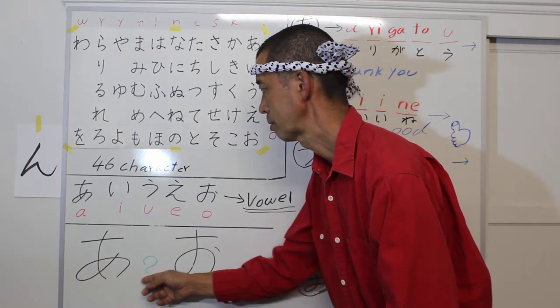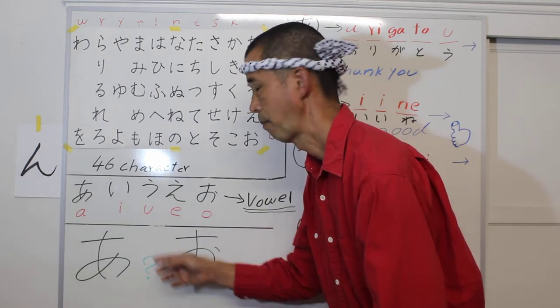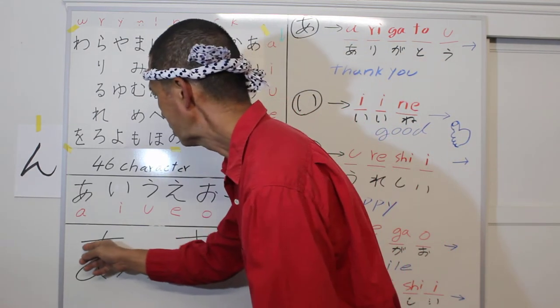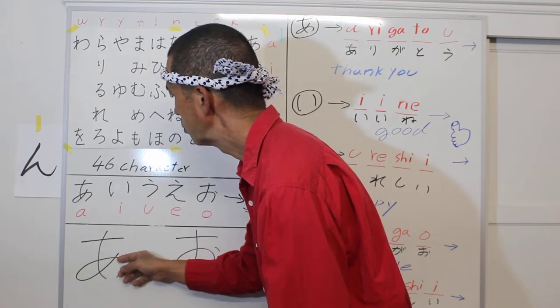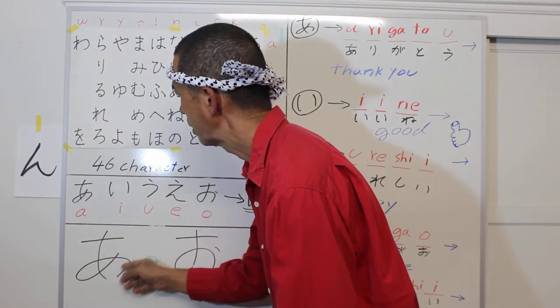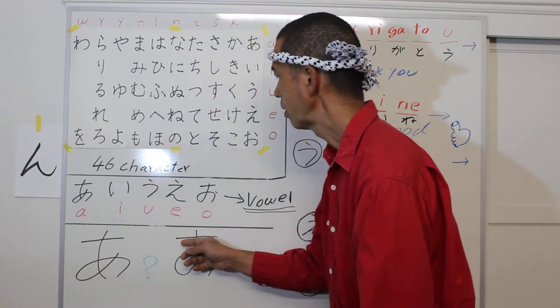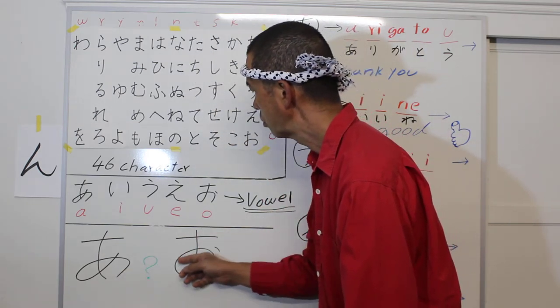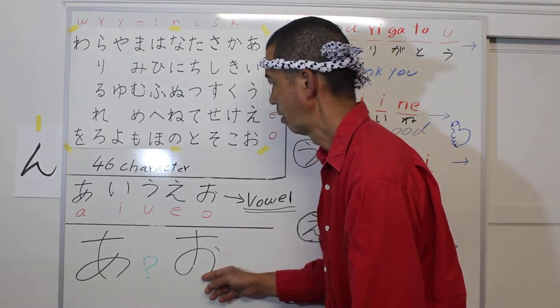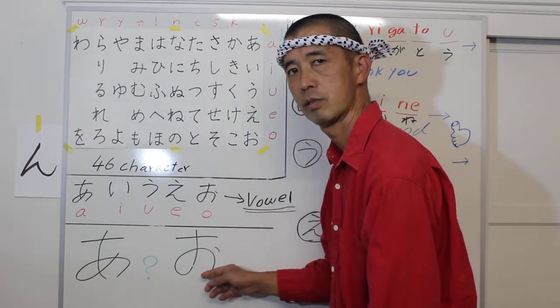But A is one, two, three. O is one, two, two. That's the difference.